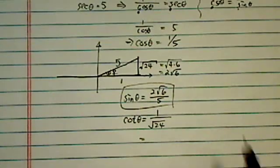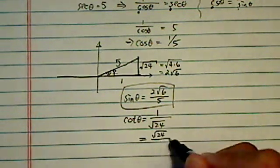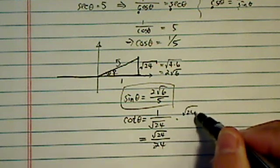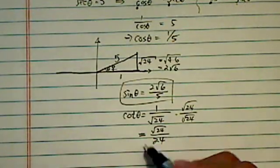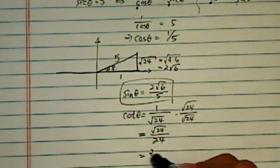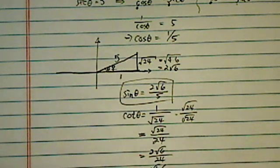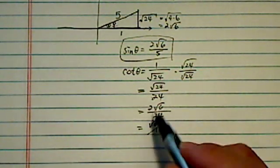Mathematicians require you to make this one look a little prettier, rationalized. So we're going to multiply radical 24 up and down, and simplify here, 2 radical 6, 24, so we have radical 6 over 12, and it's cotangent. I hope you can see the 6.